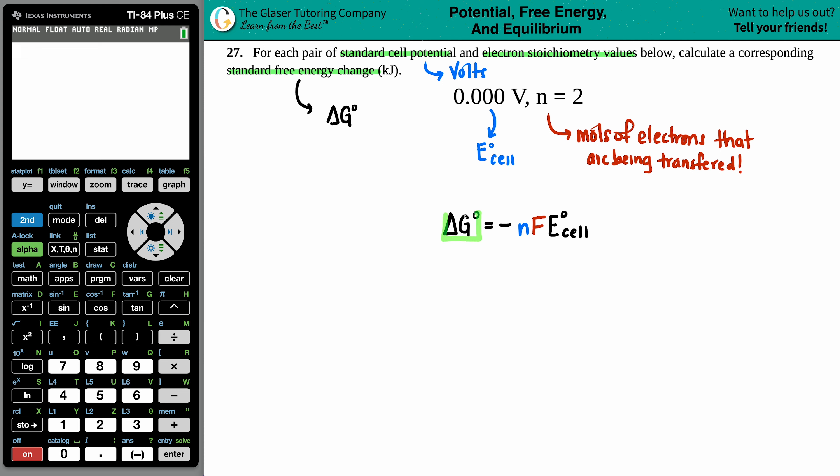We're solving for the free energy change. So that means that I should know the nF and the E cell. Well, we already talked about the two of them. n in this case is going to be two. And the E cell is going to be 0.000 volts.